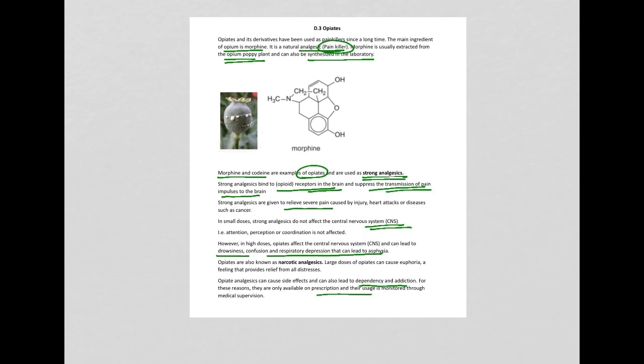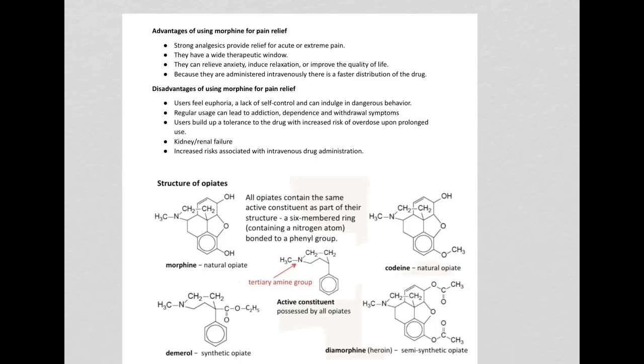The advantage of using morphine for pain relief is that it is a strong analgesic, which means it produces relief from acute or extreme pain. They have a wide therapeutic window, which means that the drug is safe.